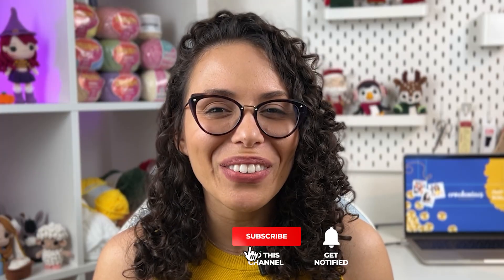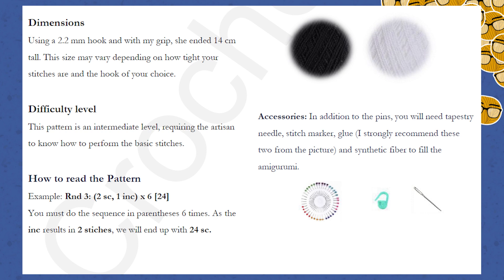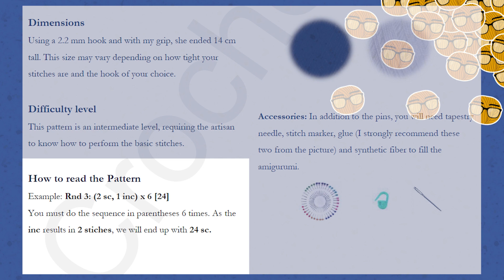Another thing I want to show you from my Lumali pattern is something I usually do, and some other designers also do. In the first pages with instructions, you can see I have the list of abbreviations, dimensions, difficulty level, and also a small example of how to read the pattern. In this example, round three: two single crochets, one increase — you make that sequence six times and end up with 24 stitches. Remember that one increase means two single crochets, so two single crochets plus two (from the increase) equals four, times six equals 24 stitches.